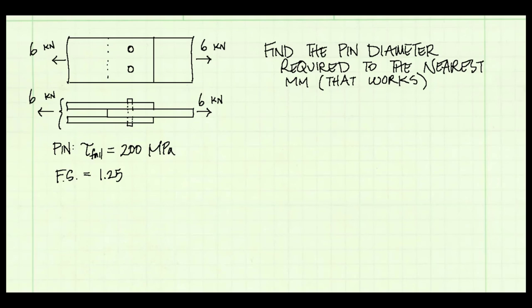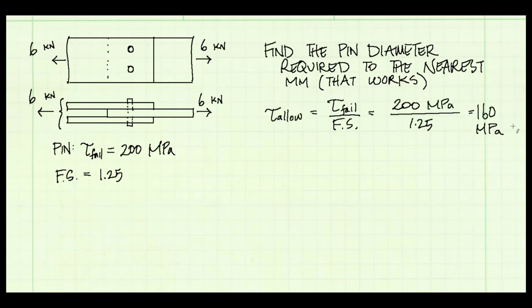Here's a simple shear condition with three plates pinned together with two pins. We need to find the pin diameter required to the nearest millimeter. The pin has a failure stress of 200 MPa and we use a factor of safety of 1.25. The allowable stress tau_allowable equals the failure stress divided by the factor of safety, giving 160 MPa — so we must size the pin so stress does not exceed 160 MPa.